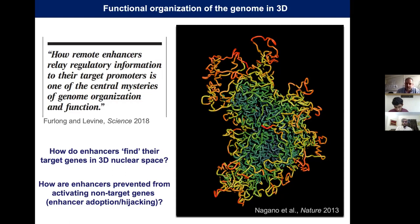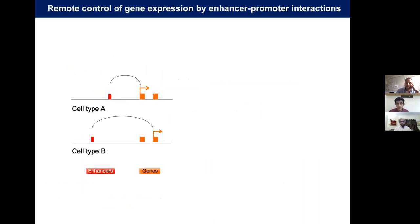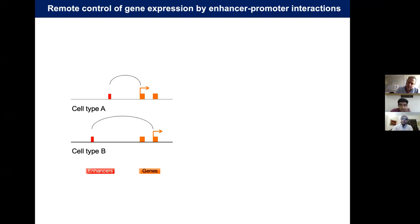I want to talk about enhancer-promoter contacts in gene expression control. About 98% of the genome — mostly in humans and mice — is non-coding: it doesn't encode proteins. The old notion that this was 'junk DNA' is now a debunked theory. Within this vast non-coding space, interspersed gene regulatory elements such as enhancers determine when, during differentiation, specific genes are on and off.